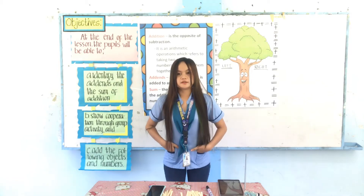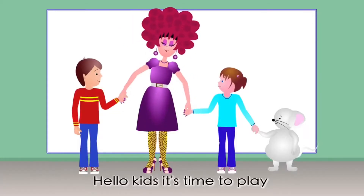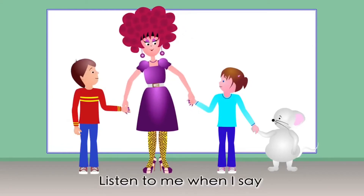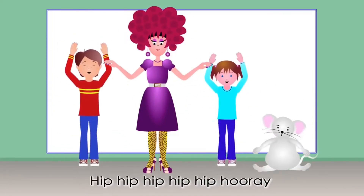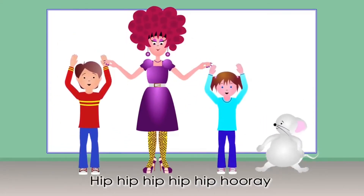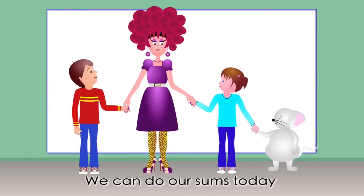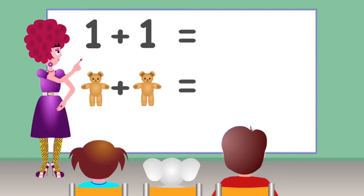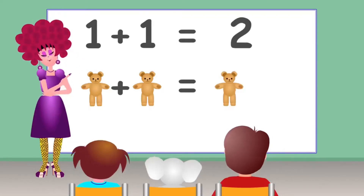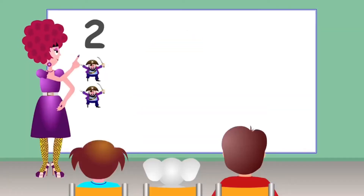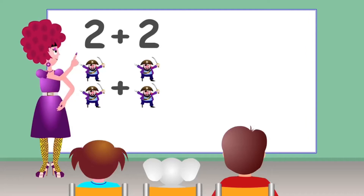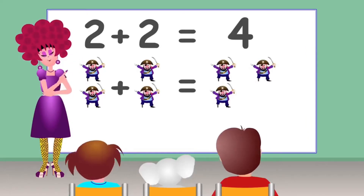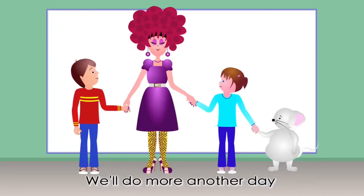Hello kids, it's time to play. Listen to me when I say: Hip hip hip hip hooray! We can do our sums today. Teddy — one plus one equals two: one, two. Pirate — two plus two equals four: one, two, three, four. We'll do more another day.